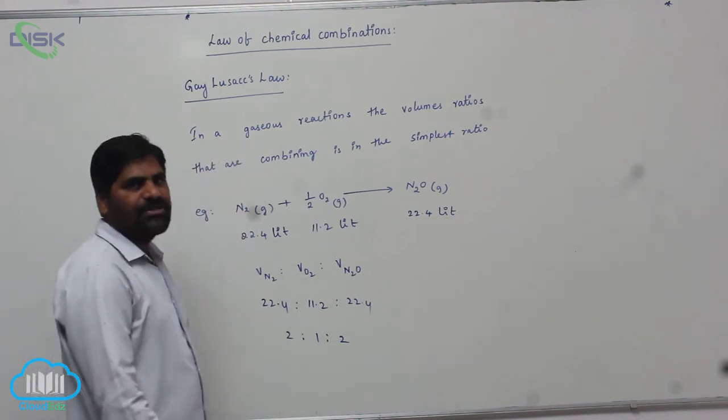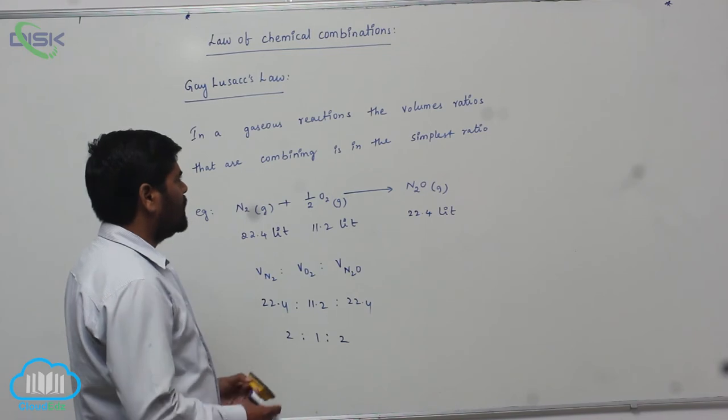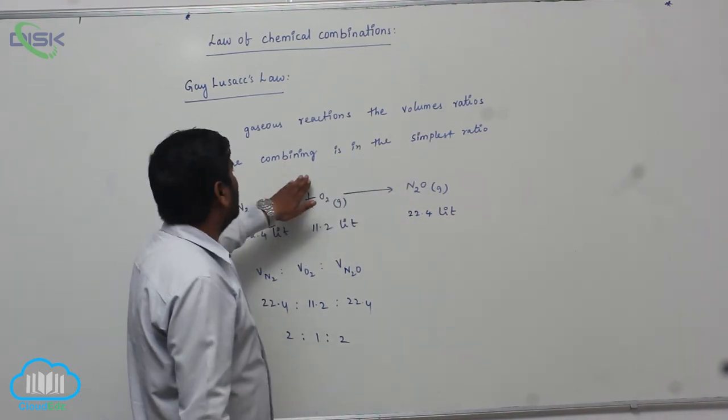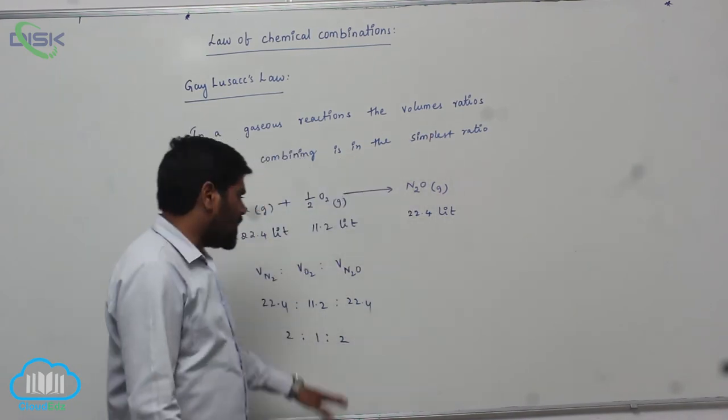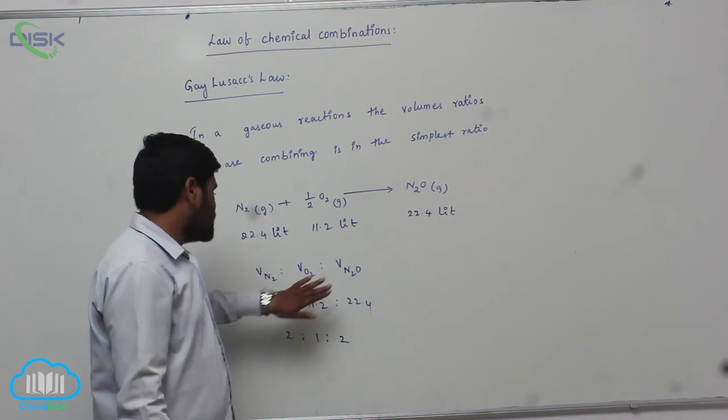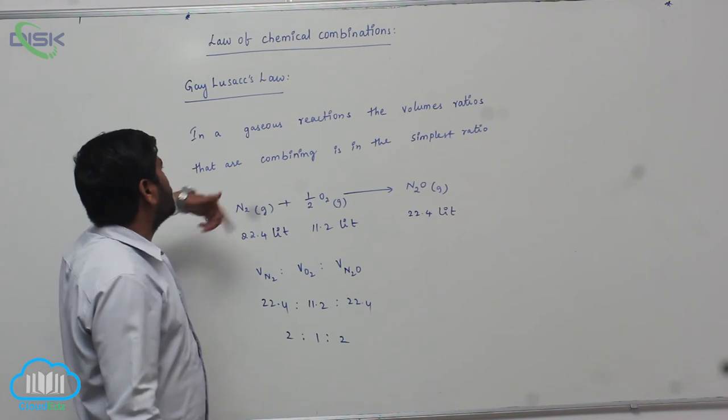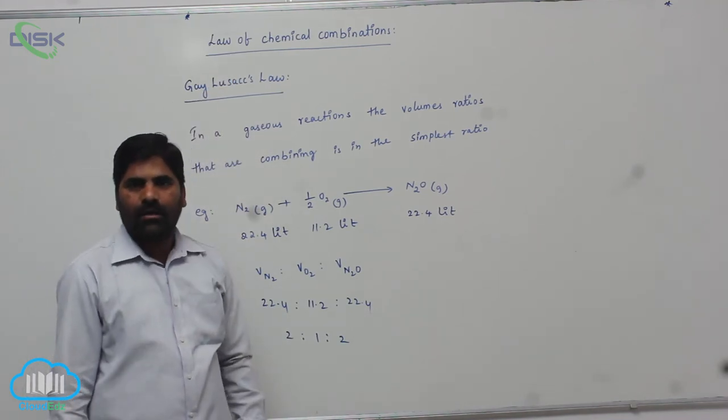So this law states that in a gaseous reaction, the volume ratios that are combining is in the simplest ratio. This particular law is known as Gay-Lussac's law.